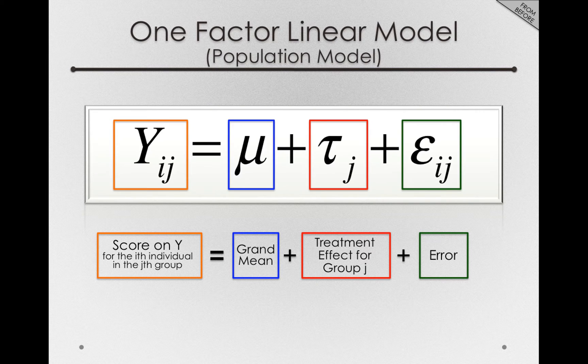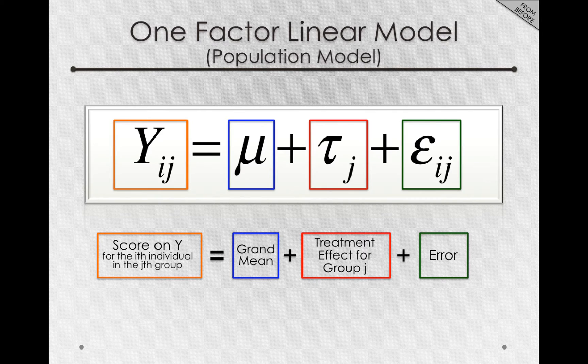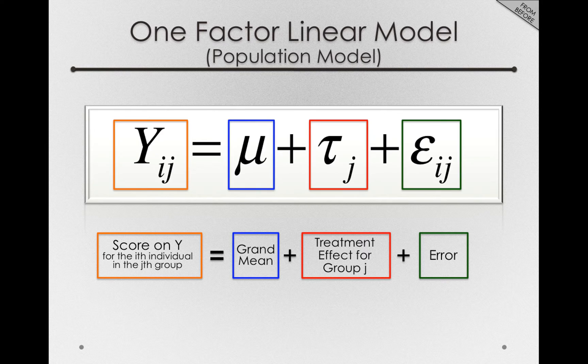In the last module, we developed a one-factor linear model that allowed us to describe each score in a dataset on the basis of three separable components: the grand mean, plus the treatment offset for a group an individual is a member of, plus individual error.